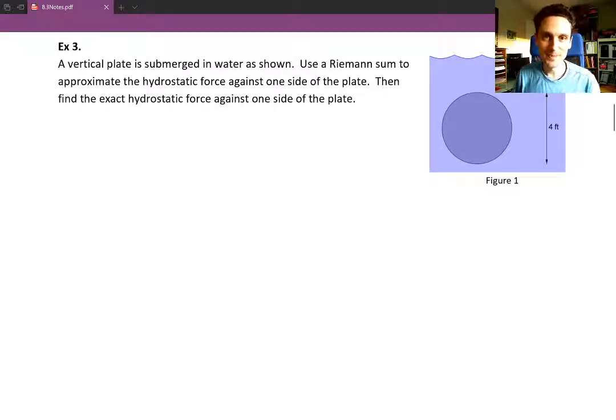Hello and welcome back. In example three we have a vertical plate that's submerged in water as shown in figure one. It says use a Riemann sum to approximate the hydrostatic force against one side of the plate, then find the exact hydrostatic force against one side of the plate.